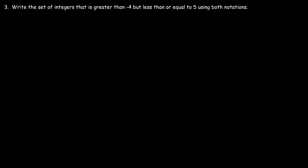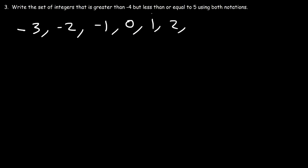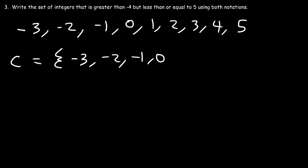Number 3: write the set of integers that is greater than negative 4 but less than or equal to 5, using both notations. Integers can be positive or negative, and they include 0. The integer greater than negative 4 is negative 3. Then we have negative 2, negative 1, 0, 1, 2. It has to be less than or equal to 5, so it includes 5. Let's use set C — in roster notation, set C contains these elements.